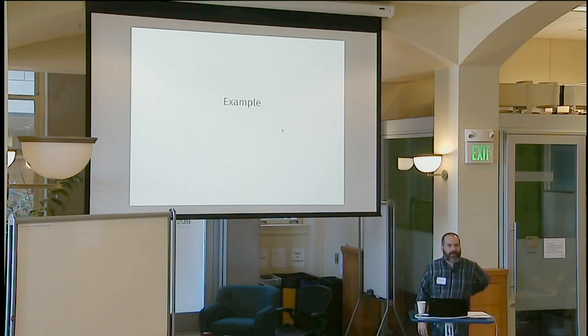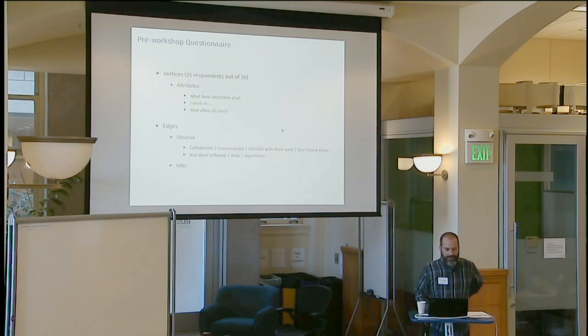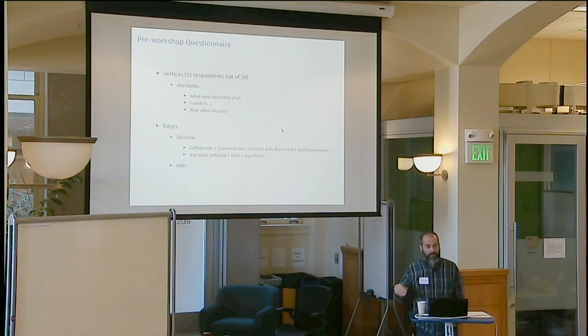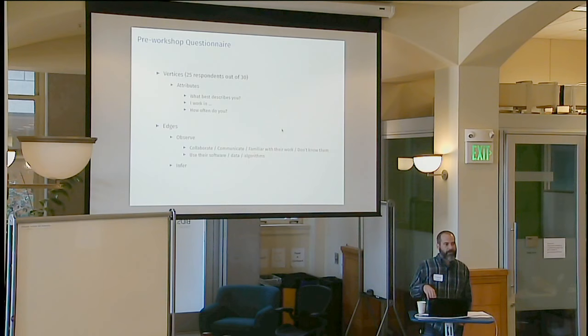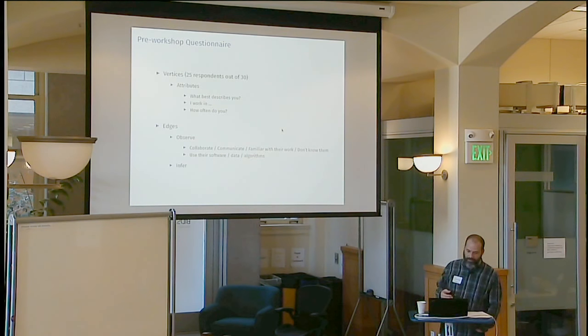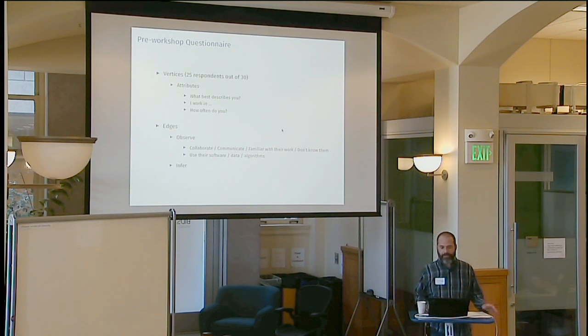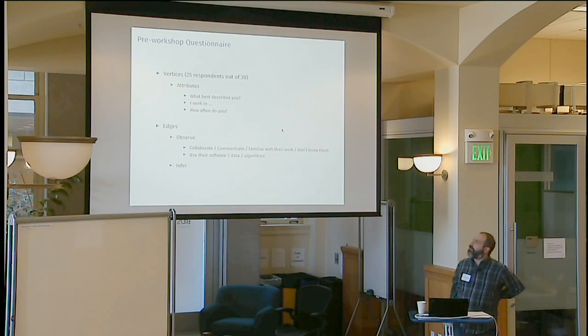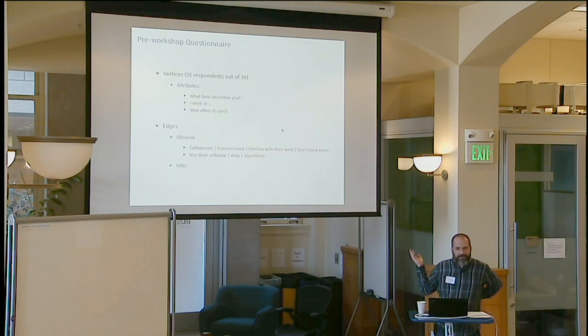So now let's even get more concrete. We're going to look at a very specific example. So the example is going to be us. I sent out a questionnaire to 30 of the participants a week ago. Some new people have added on since then, so you may not know what I'm talking about, but hopefully it'll be obvious. In that survey, I asked everyone to say some stuff about themselves. So first I was just getting some attributes about the vertices or the people. Twenty-five of the 30 people I sent it out responded. And then I asked them specific edge questions where I'm basically asking people to tell me where the edges are. So in those cases, I asked people who they collaborated with, who they communicate with, who they're familiar with, whose work they're familiar with, and whether they didn't know them.